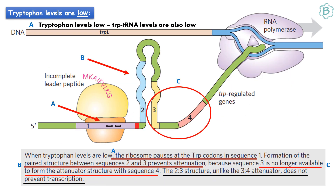When tryptophan levels are low, there is low tryptophan-tRNA available. If there is a low level of tryptophan-tRNA, the ribosome gets halted at region 1. Thus, region 2 is free to base pair with region 3. This 2-3 base pair formation does not allow regions 3 and 4 to form a base pair. As a result, transcription can proceed and the tryptophan operon gets transcribed.